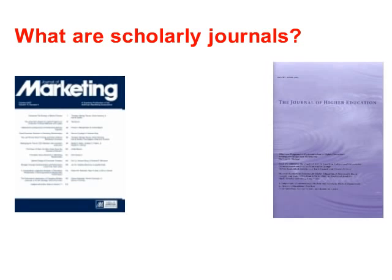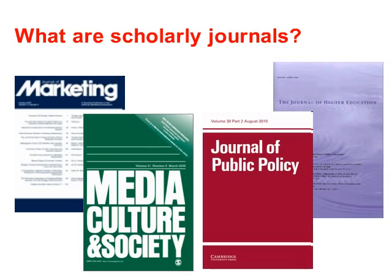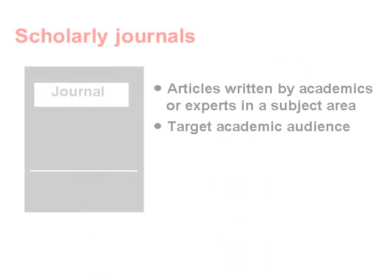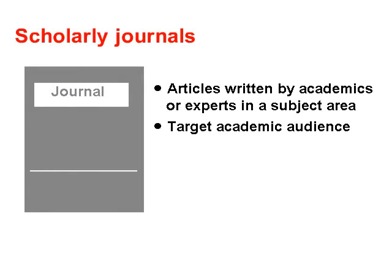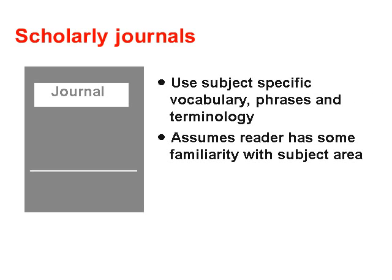So what are scholarly journals and how do they differ from other sources of information? Scholarly journals contain articles written by academics or experts in a subject area and target an academic audience. The articles use subject-specific vocabulary and terminology, since it is assumed the reader will have some familiarity with the subject area.